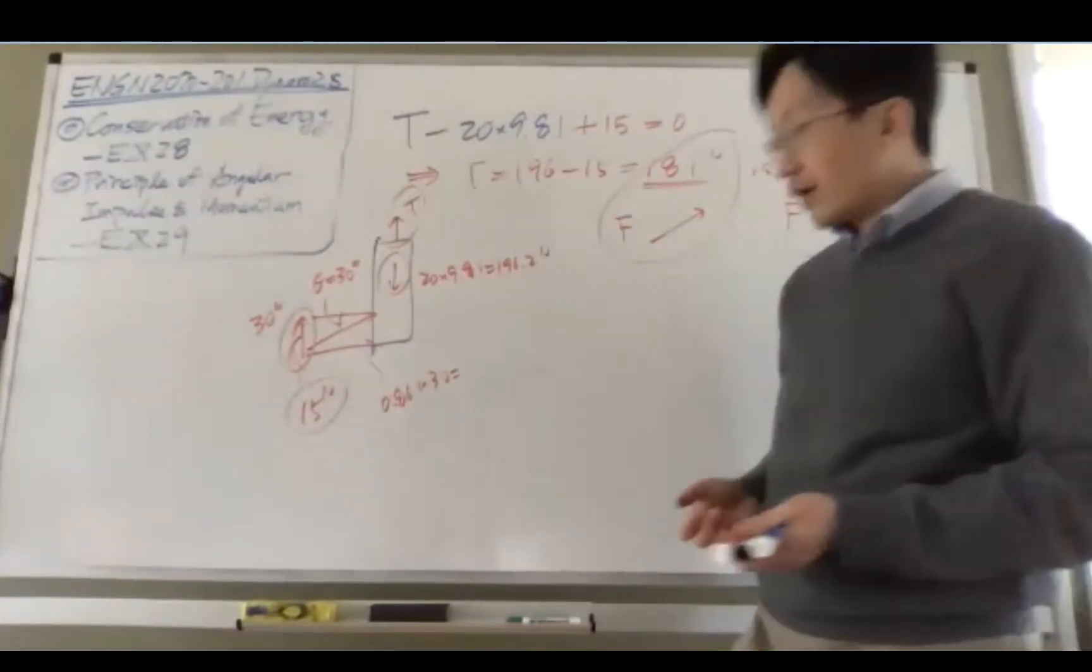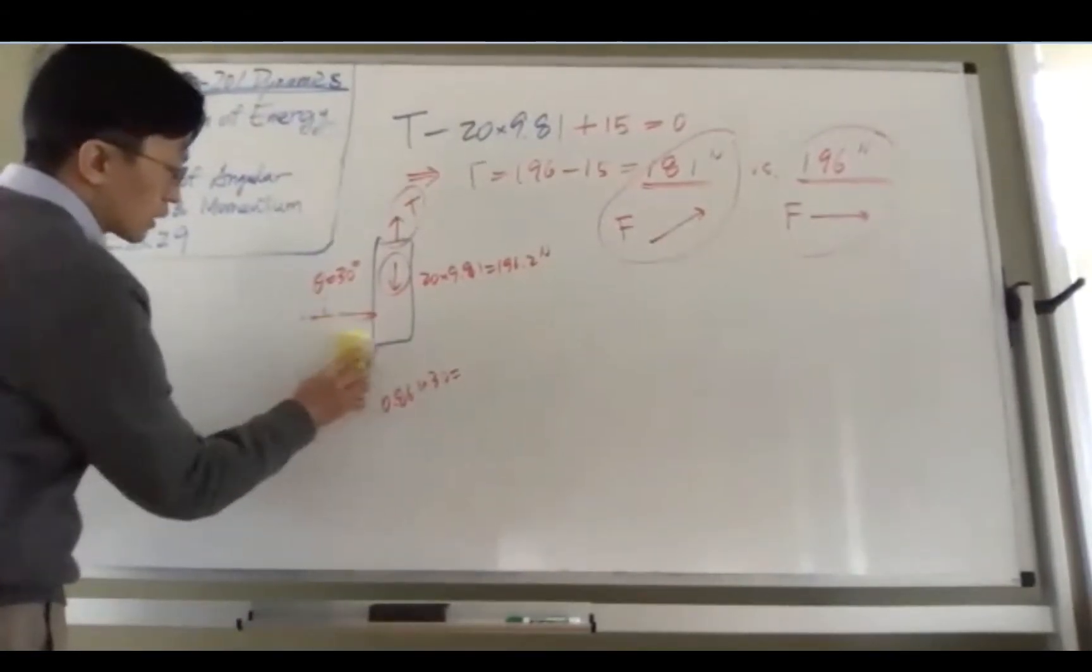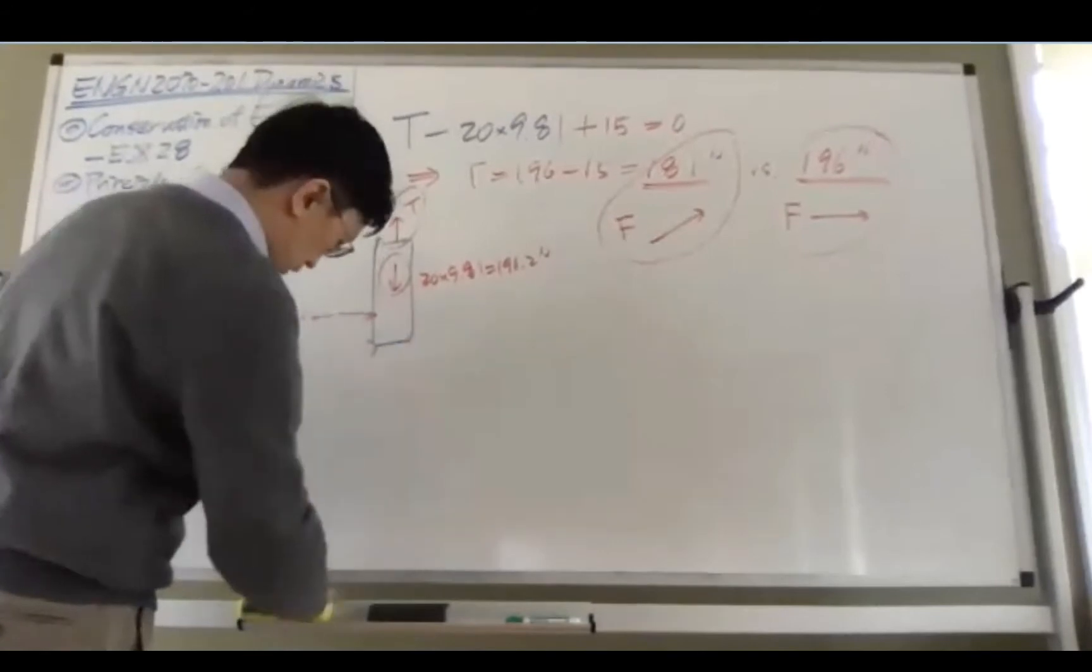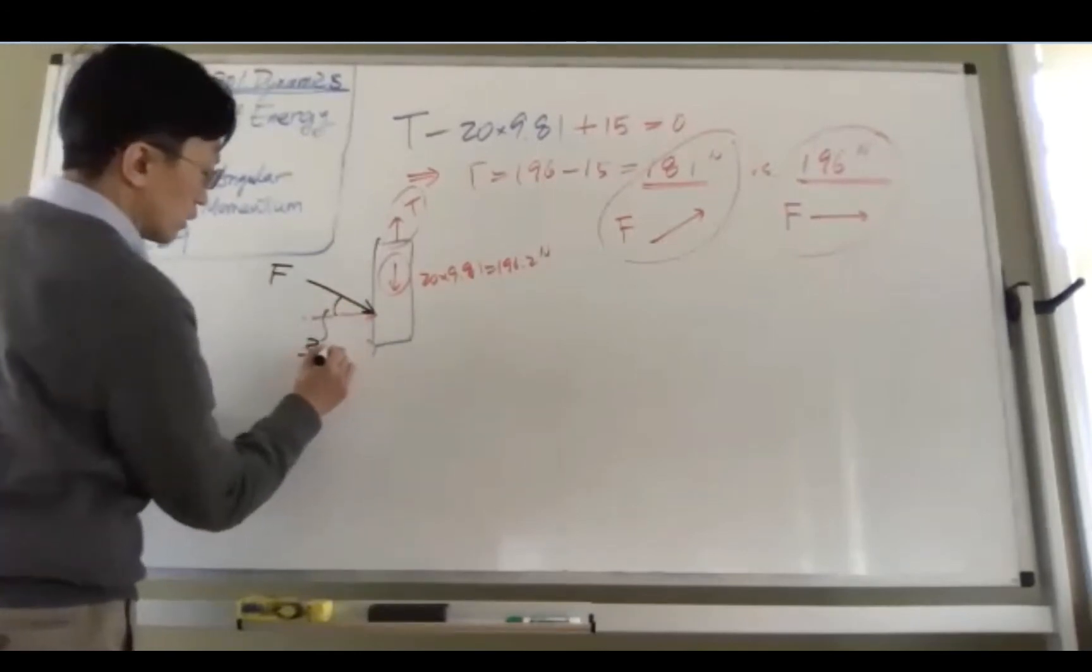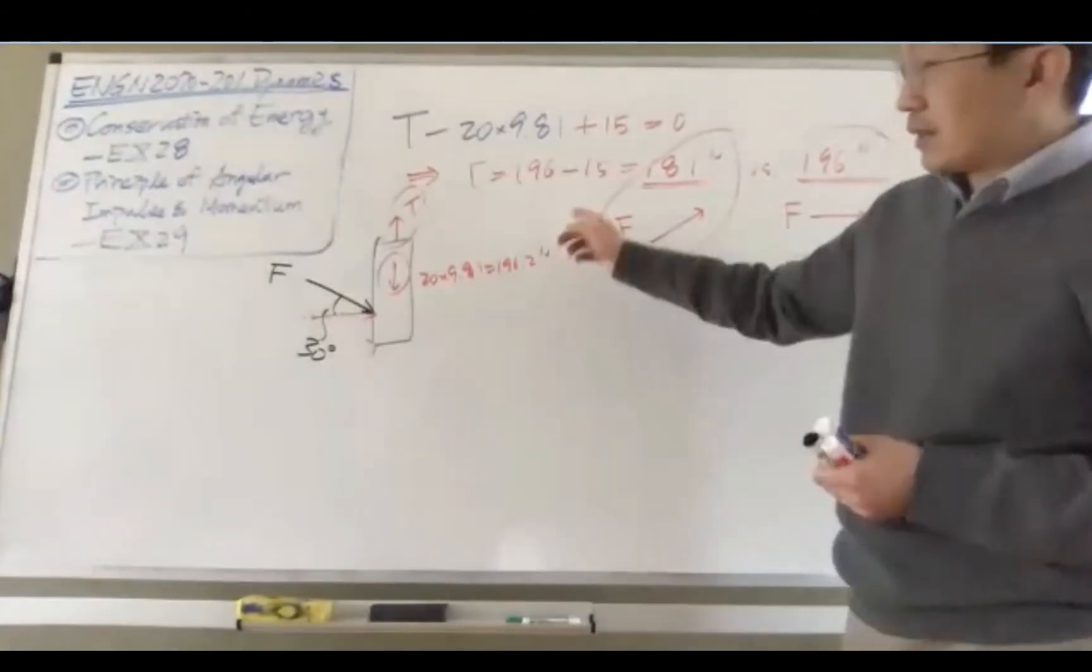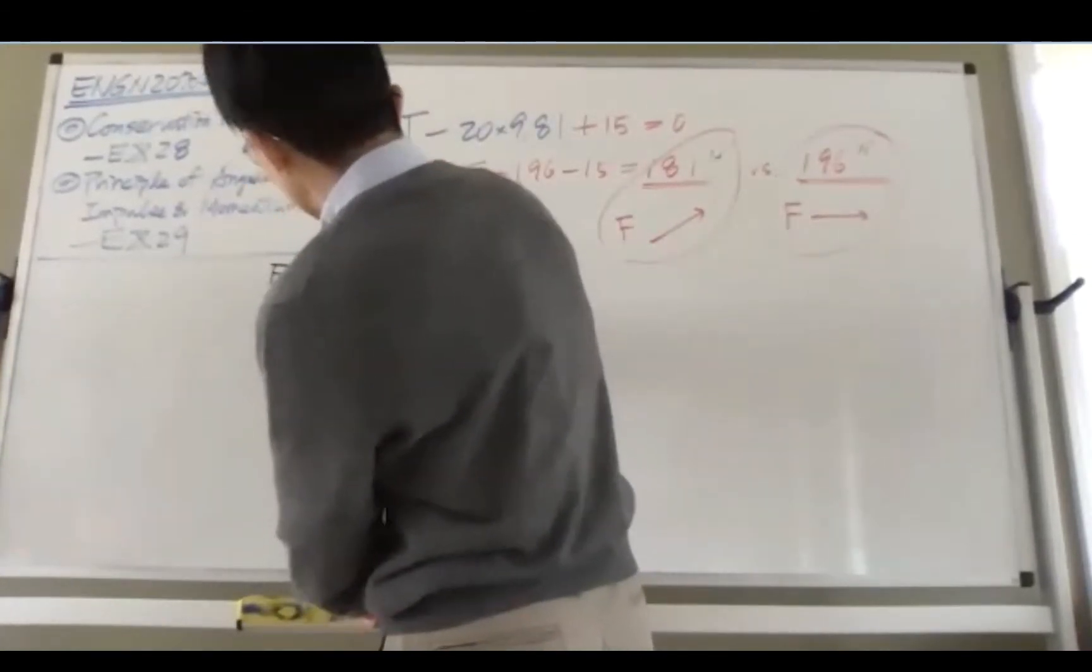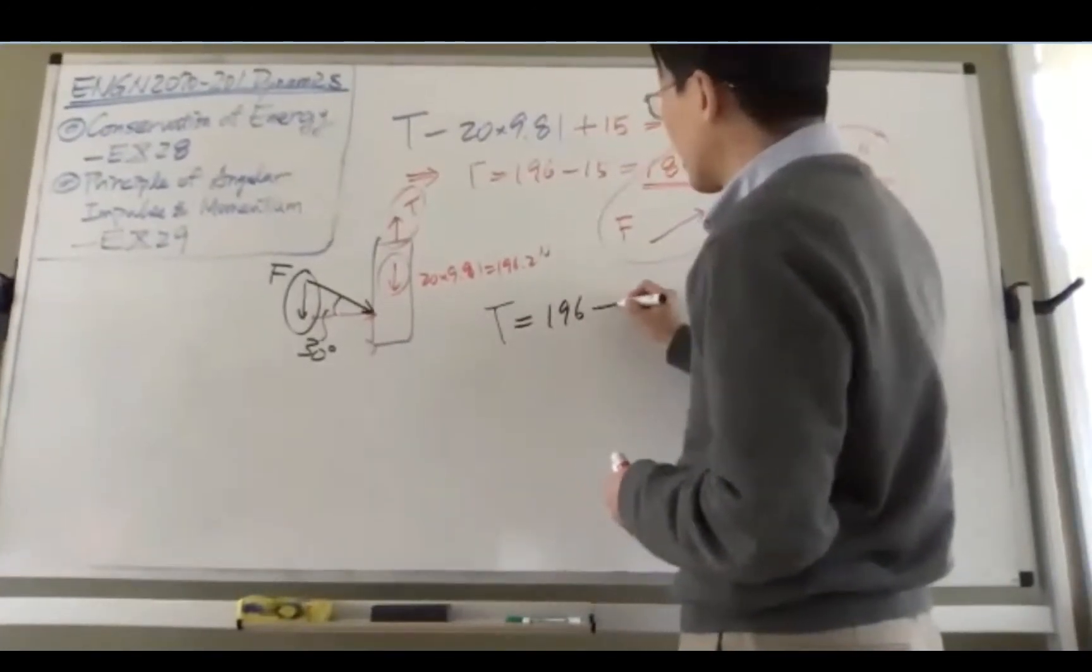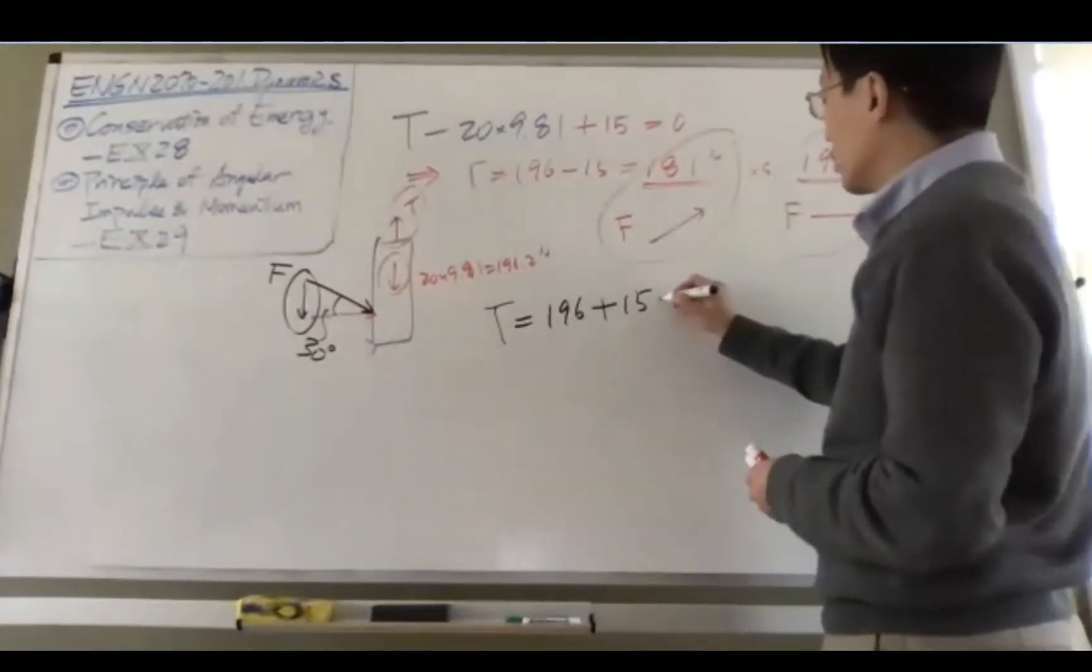And similarly, what if a boxer applies the force not upward but inclined downward? What happens to that? If that's the case, if you apply the force like this, and this is 30 degrees, now it's going to add more force to the tension. So if that's the case, the tension is going to be 196 plus 15, because this one will add to this, which is going to be 211.